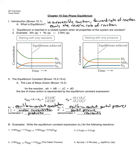Our first concept in Unit 6. Unit 6 is on equilibrium, and equilibrium is looking at reactions that are reversible. This is going to be a fairly difficult unit — it covers three chapters in your textbook.